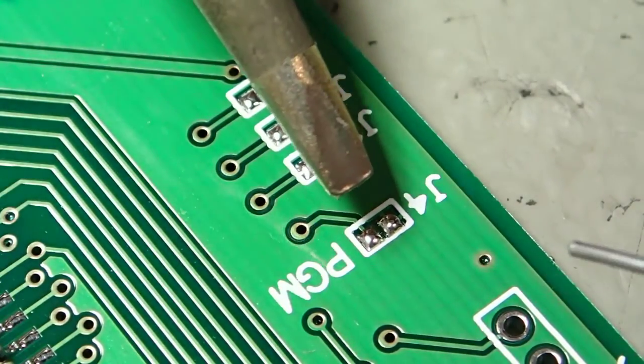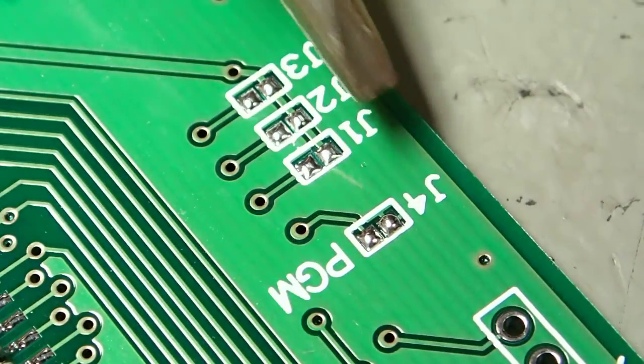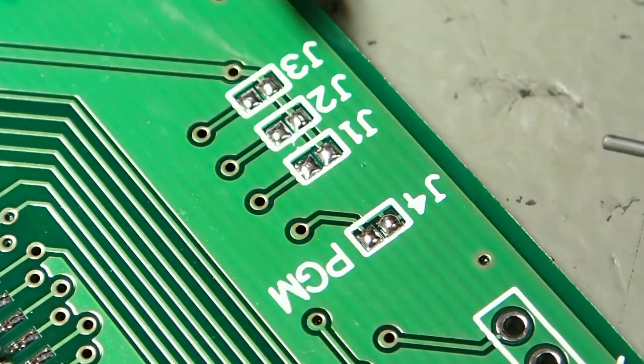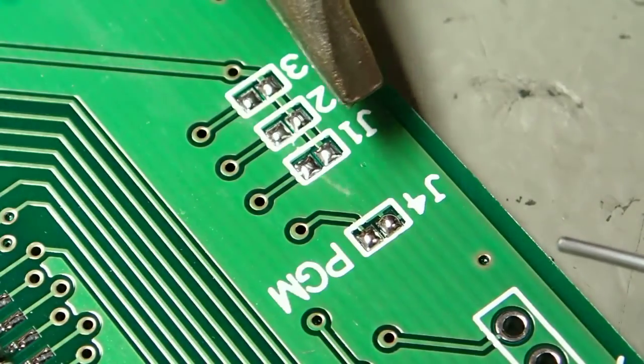I like to use a reasonable size chisel tip on my soldering iron. You can see all the jumpers on this board are removed at the moment, so I'll fit them first.